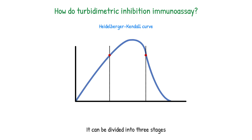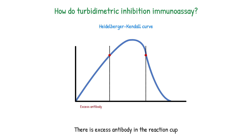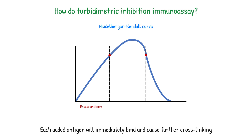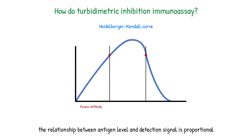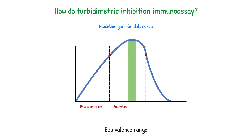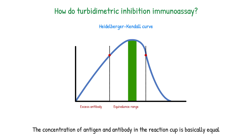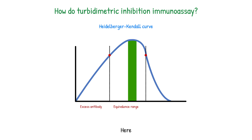The Heidelberger-Kendall curve can be divided into three stages. Stage one is excess antibody: there is an excess of antibody in the reaction cup with many free binding sites, and each added antigen will immediately bind and cause further crosslinking. In this stage, the relationship between antigen level and detection signal is proportional. Stage two is the equivalence range: the concentration of antigen and antibody in the reaction cup is basically equal, the crosslinking reaction is strongest, and the solubility of the antigen-antibody complex is lowest.